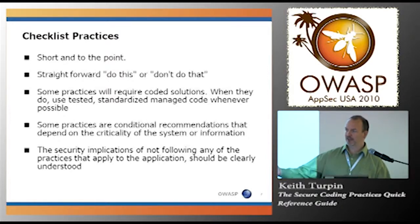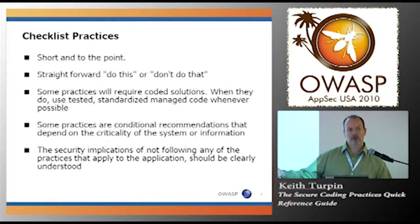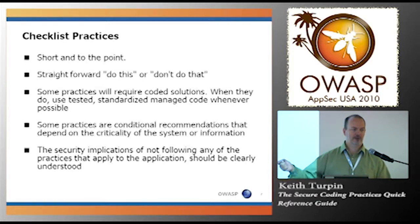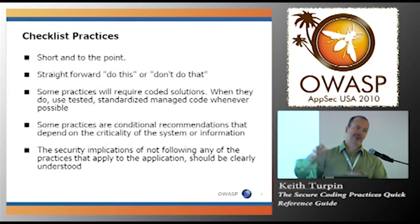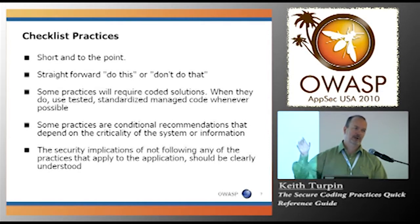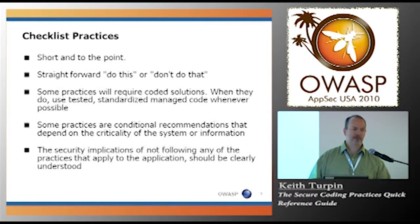Maybe you put a mitigation in that actually covers five or ten different things. So you may reference the same checklist or other checklist items—say, checklist item C, whatever. The other thing is the business may decide to operate with a risk.